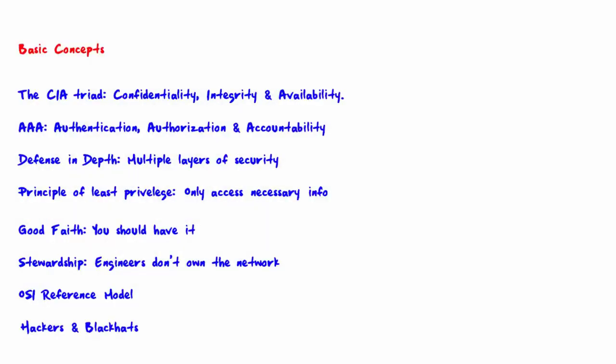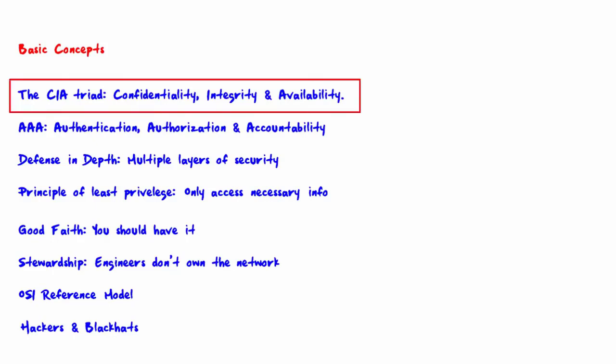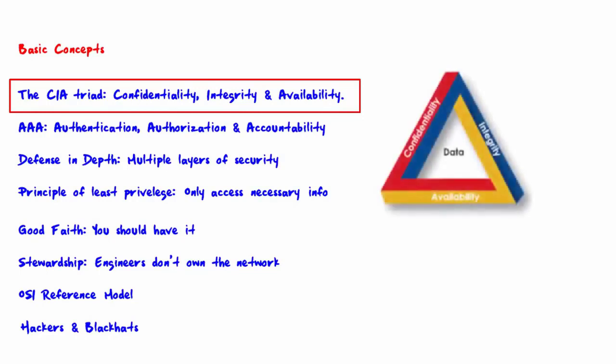Welcome to the video on basic concepts. Before we get to step one, we need to understand a few basic concepts of network security. This will give you the necessary background to tackle the 12 steps. The first concept is the CIA triad — one of the most basic principles of information security.